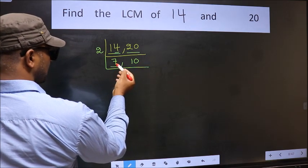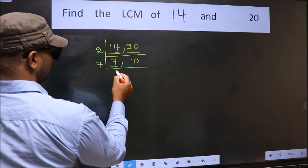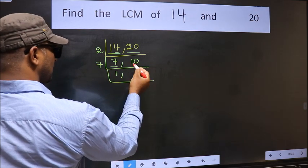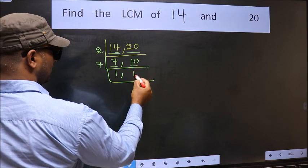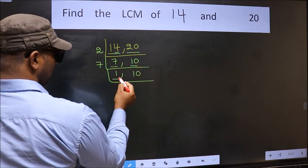Now here we have 7. 7 is a prime number. So 7 1s, 7. The other number 10. 10 is not divisible by 7. So we write it down as it is. We got 1 here.